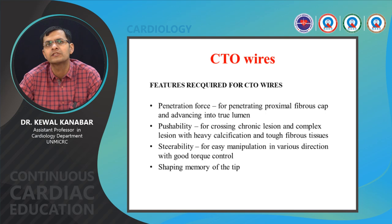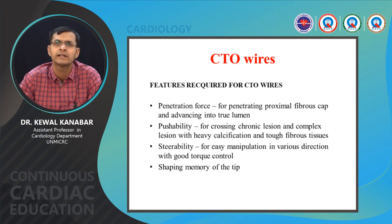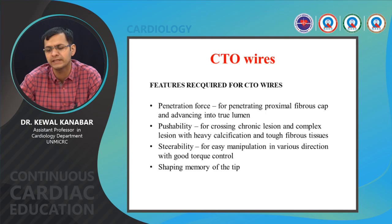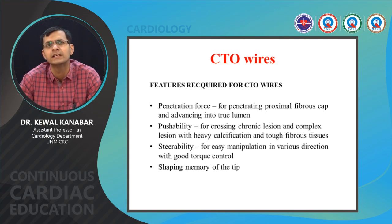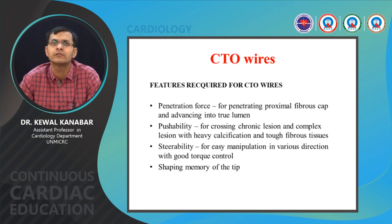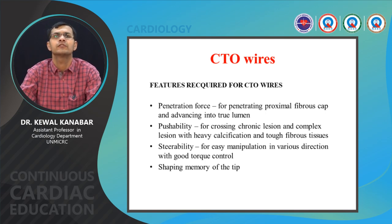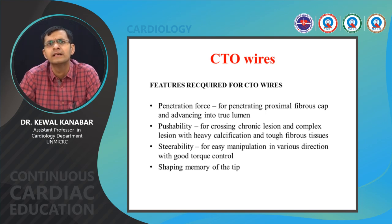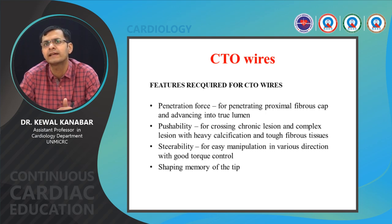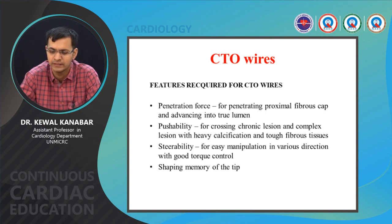About 75 to 80 percent of cases can be done with routine wires like the Sion, Fielder FC, BMW, or Run-Through. The remaining cases — CTOs, very complex lesions, dissections — need specialty CTO wires. When doing a CTO, the most important step is crossing the wire; if you've crossed the wire, you've done almost 50 percent of the job. You need high penetration force, a pushable wire, and a steerable wire for easy manipulation in different directions.